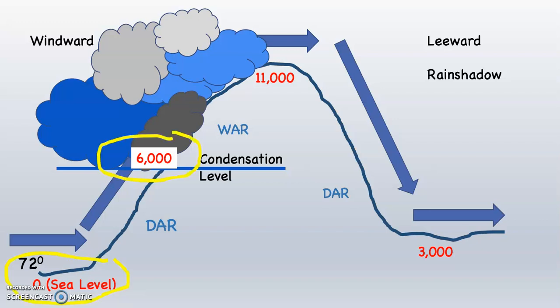Here's the first thing we do. The air at sea level is 72 degrees. It's going to rise up the side of the mountain to 6,000 feet where it reaches its condensation level. That air is rising from 0 to 6,000 feet — 6,000 feet. We've already established we're going to use the DAR, the dry adiabatic rate. So we take 5.5 times 6 for 6,000 feet, and 5.5 times 6 is 33 degrees.